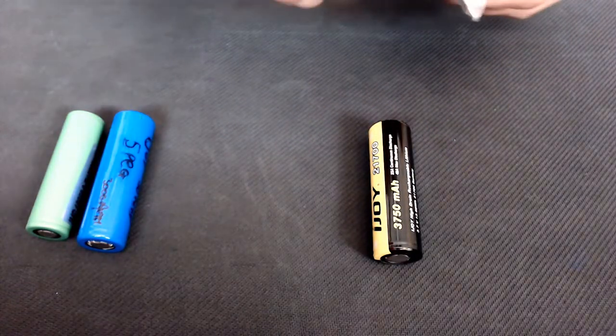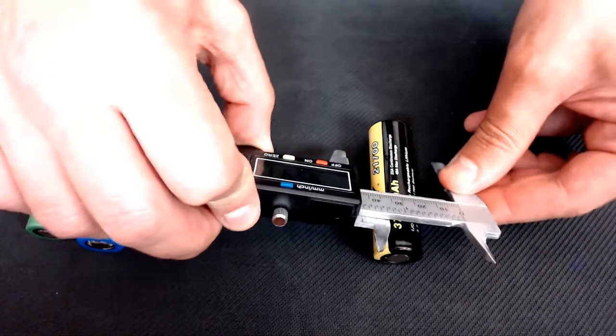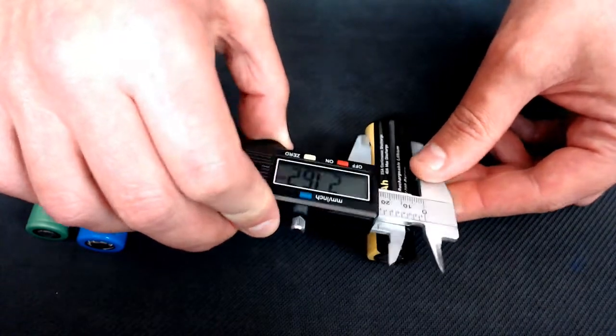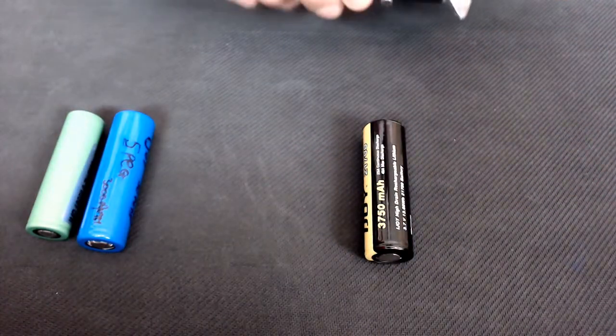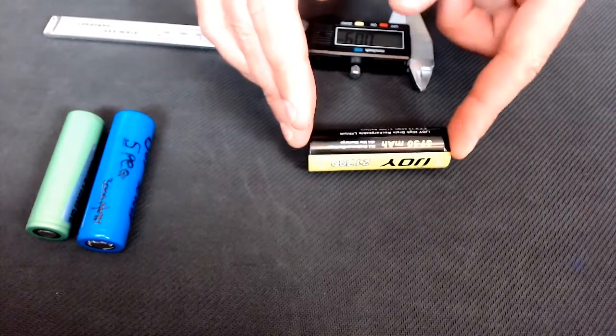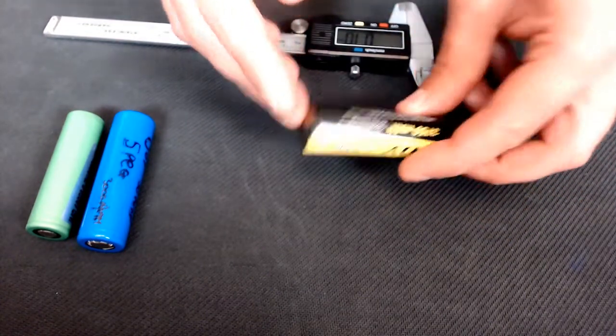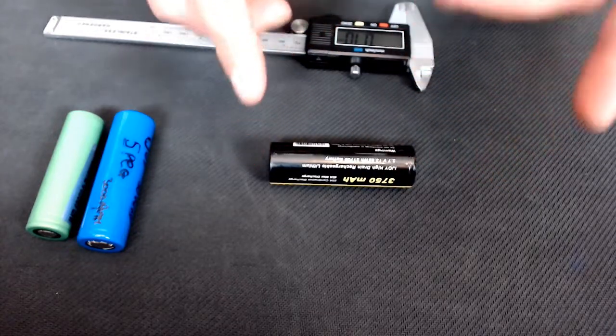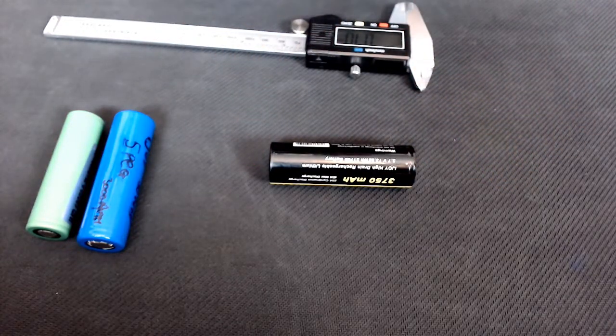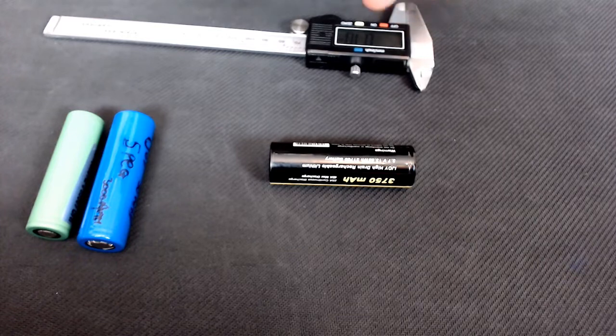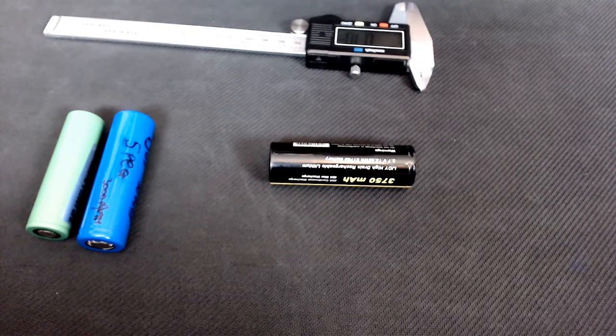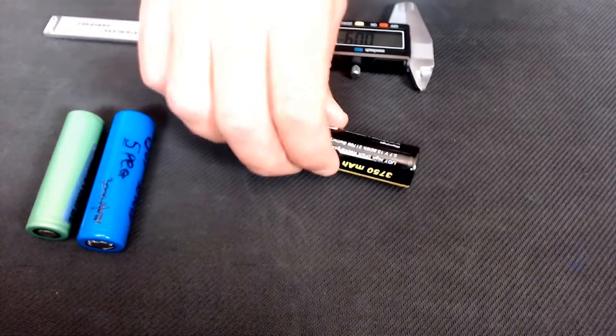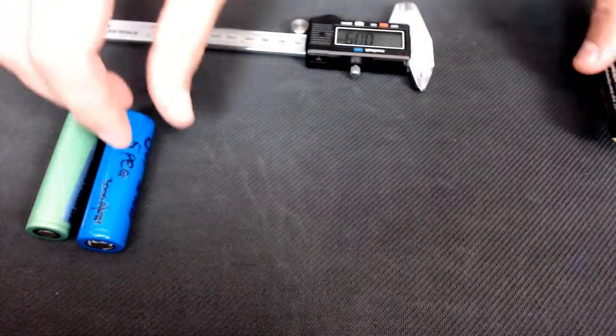If we get the calipers out and measure the diameter, you'll see we've got 21.6. Now the length of this is 70 millimeters. I don't really want to use calipers on it because I don't want to run the risk of shorting the battery out, but basically you've got 21 millimeters diameter, 70 in length - 21, 70, and an extra zero thrown on for good measure, giving you 21700.